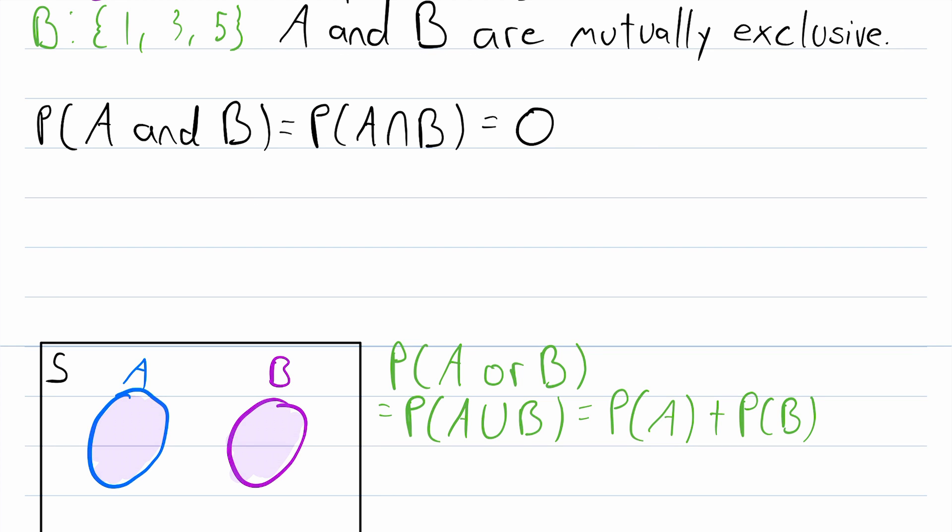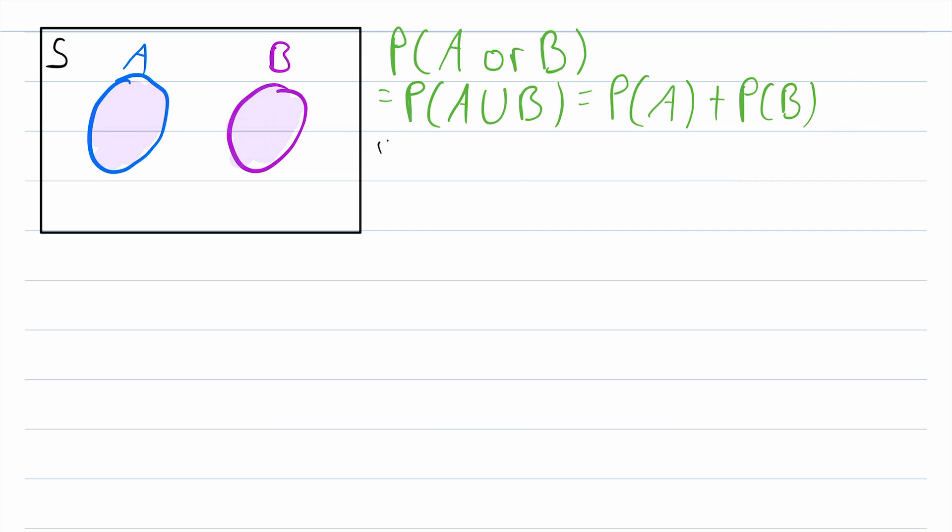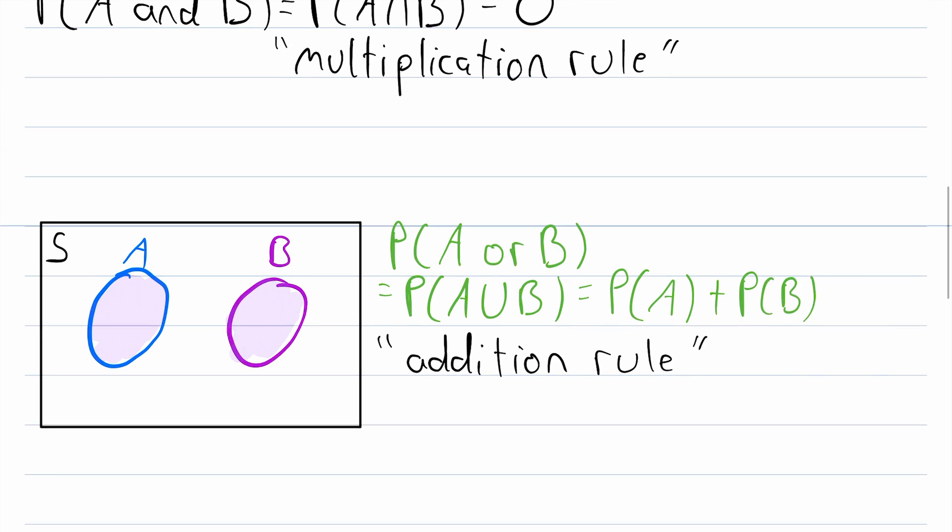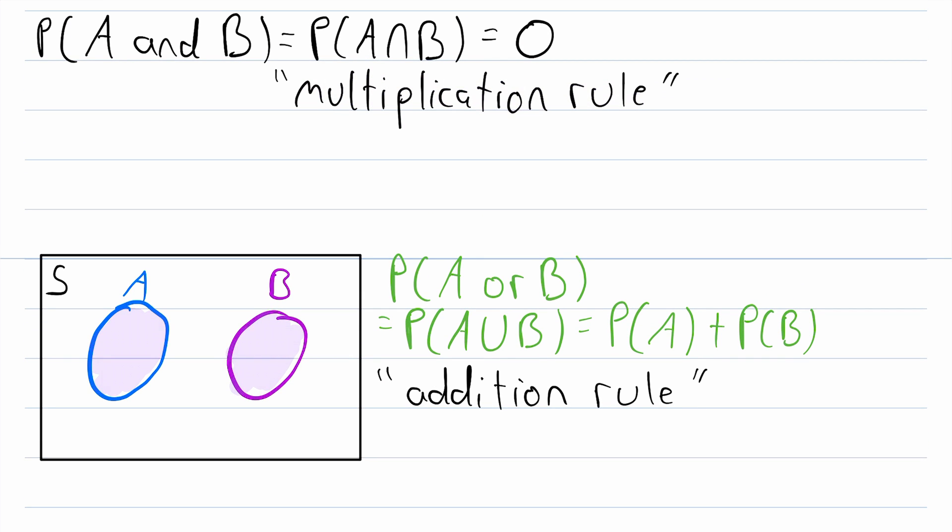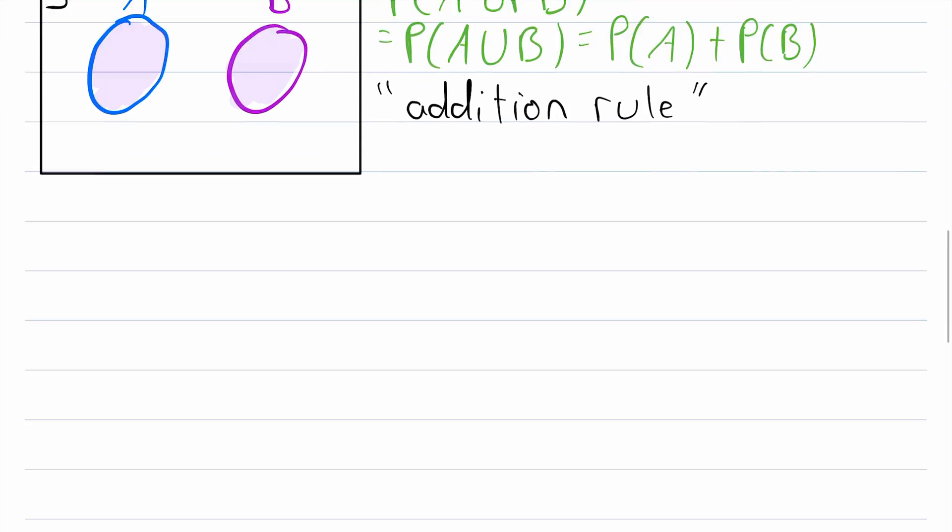This calculation here is a special example of what's often called the multiplication rule. And then this example down here is a special example of what's often called the addition rule. More specifically, it's the addition rule of probability and the multiplication rule of probability. But anyways, it's pretty straightforward. That's what mutually exclusive events are. Two events are mutually exclusive if their intersection is empty, which means they can't both occur simultaneously.